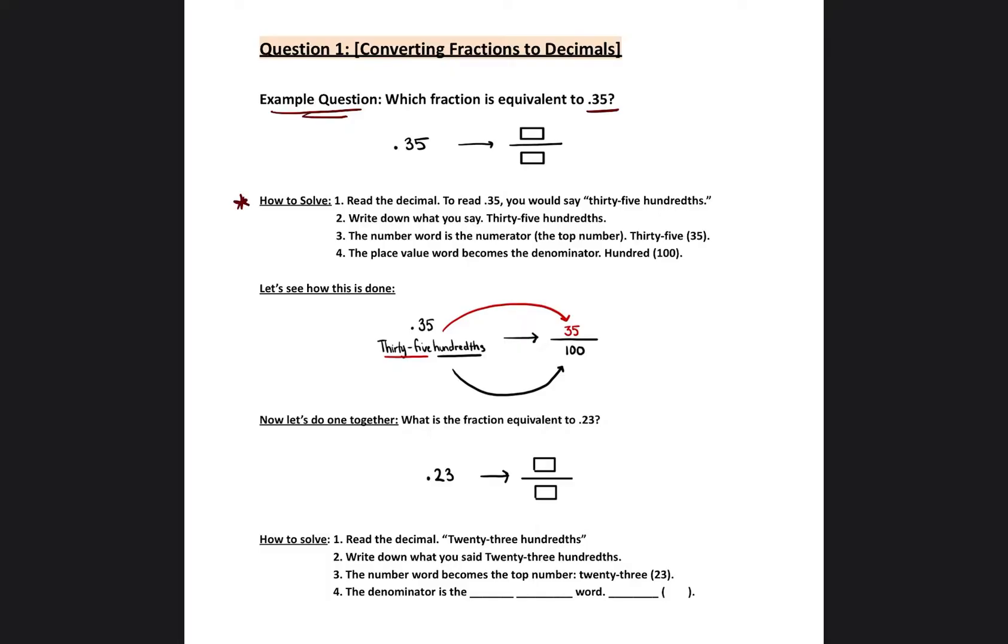First, you read the decimal. So if you want to read 0.35, you would say 35 hundredths. So I'm going to write down 35 hundredths. I already have it written down here, but you can write it down on your piece of paper.